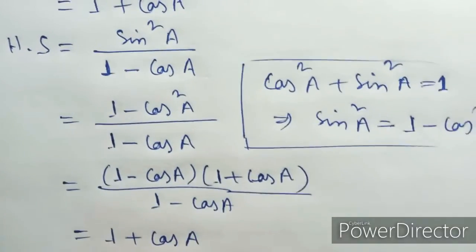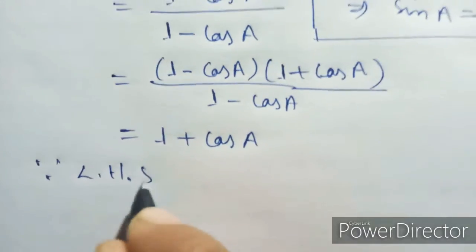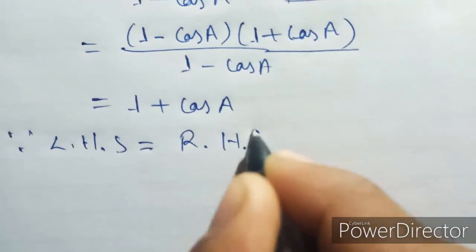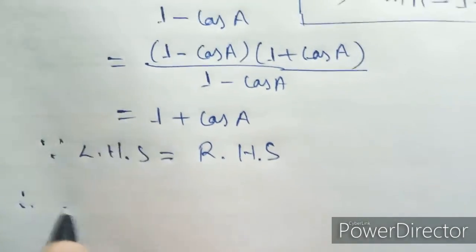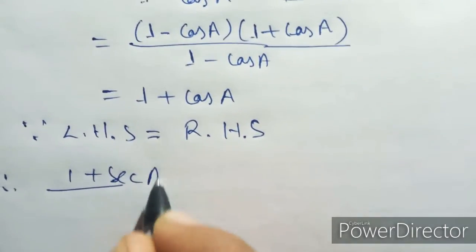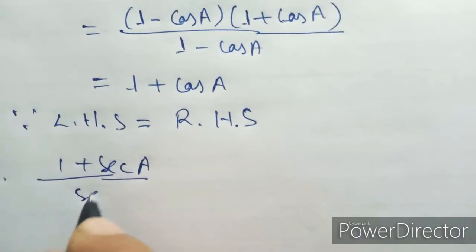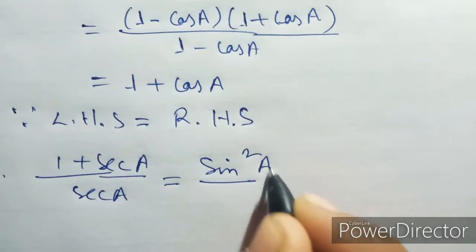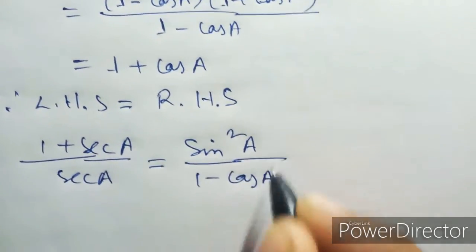Left hand side equal 1 plus cos, right hand side equal 1 plus cos. So left hand side equal right hand side. Thus 1 plus ck by ck equal sin square a over 1 minus cos a. Proof complete.